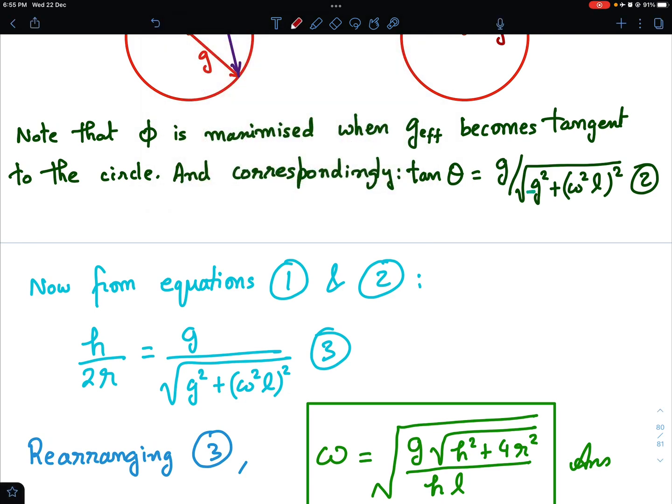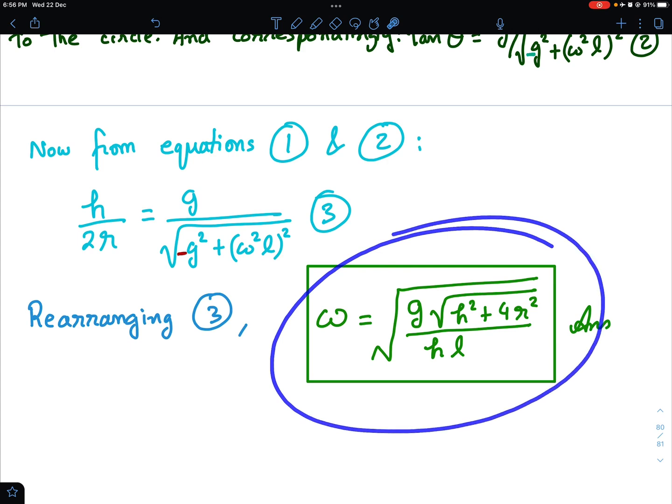Finally, if I solve these equations, I mean equate the RHS of the two equations, you will get omega as this. This is our final answer.